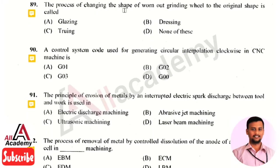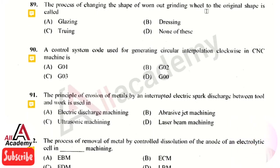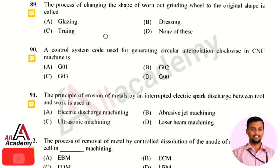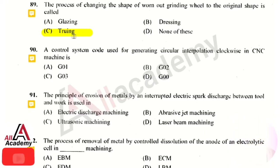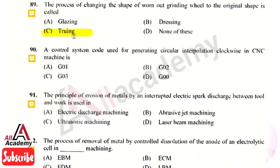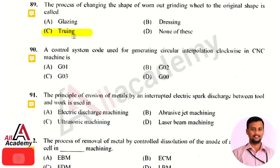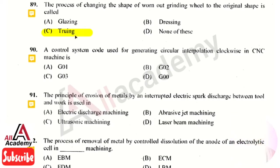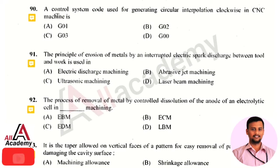The next question: the process of changing the shape of a worn-out grinding wheel back to its original shape is called — the right answer is truing. Truing is a process in which worn-out grinding wheels are restored to their original shape. It is essentially reshaping or recreating the original shape of a grinding wheel.